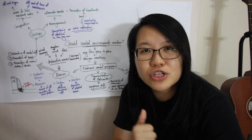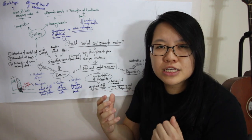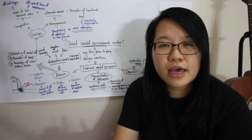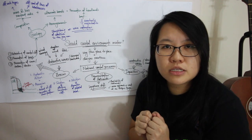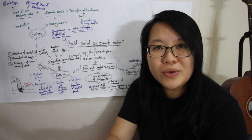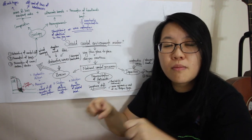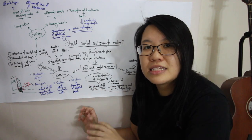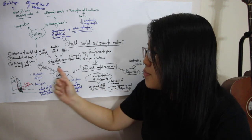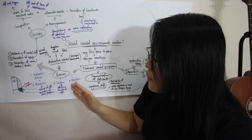The first thing to recognize about destructive waves is that they have a weaker swash and a stronger backwash. Swash brings material up to the coast and backwash removes material from the coast. So if the swash is weaker than the backwash, the backwash is removing more materials than it is depositing on the coast, and therefore since it's removing more, erosion occurs.